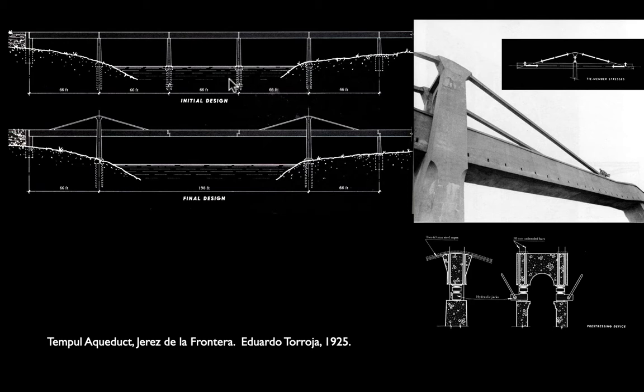The problem was that nobody wanted to dig deep foundations in the middle of the river. So Toroja's solution was to do a very simple, very elegant cable-stayed structure and basically eliminate the middle two piers. In the final design, you can see this goes from being a 66-foot span — something doable in post-and-beam construction — to being a really big span, 200 feet, where you absolutely need to do something more dramatic beyond simple bending structures.